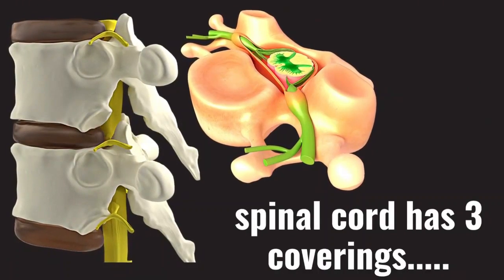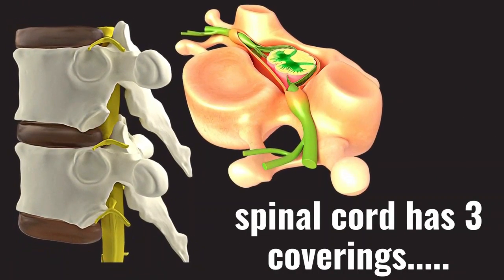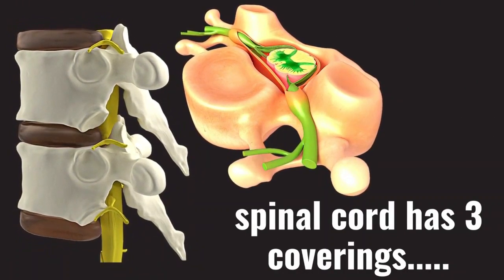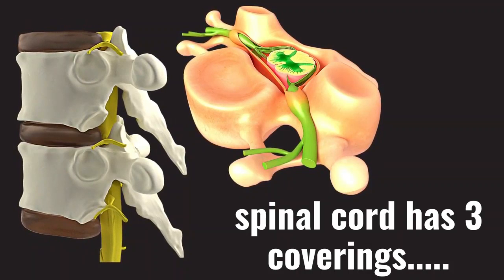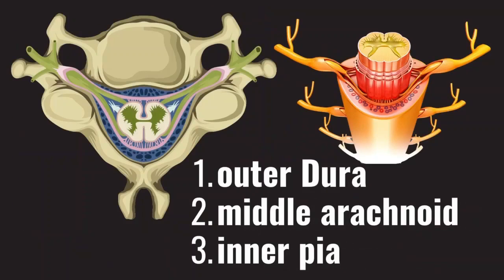The spinal cord has three coverings or membranes. These are the outermost dura mater, the middle arachnoid mater, and the innermost pia mater.